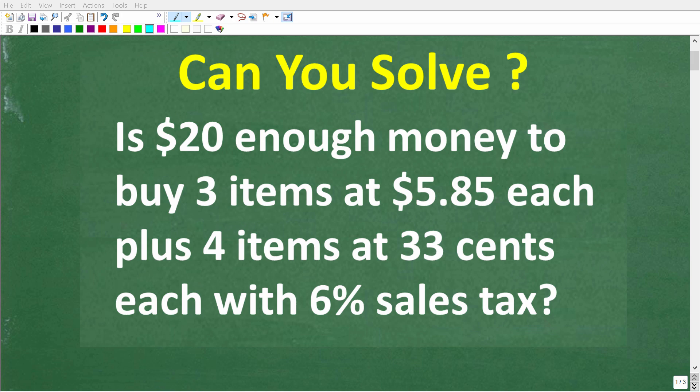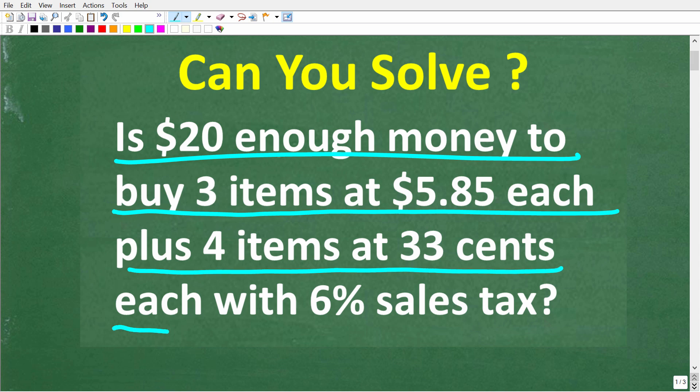All right, so let's see if you have the practical math skills to answer this simple question. Is $20 enough money to buy three items at $5.85 each plus four items at $0.33 each with 6% sales tax?